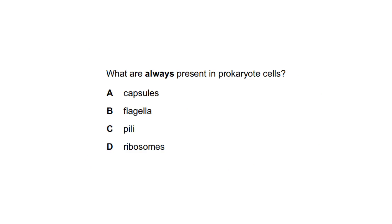What are always present in prokaryotic cells? Capsules are found only in some bacteria. Flagella in some bacteria. Pili in some bacteria. Ribosomes are found in all bacteria. That's all for this video.